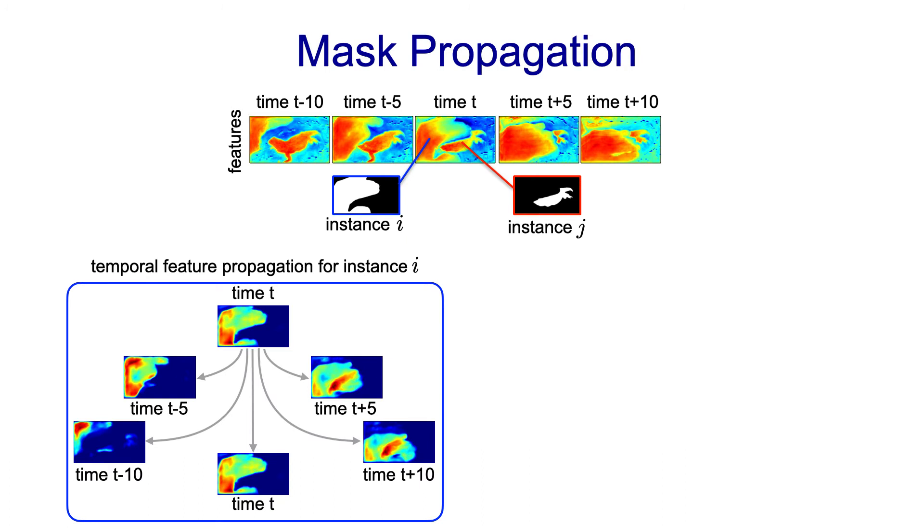Then for each object instance in frame t, we propagate its respective features from frame t to every other frame in the clip. The purpose of our temporal feature propagation scheme is to produce instance-specific feature maps that are spatially aligned with the frame-level features previously computed for every time step.